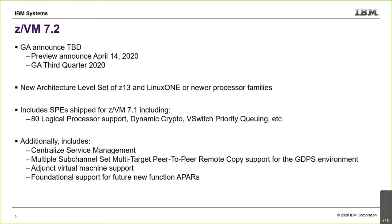With 7.2, all the SBEs — new function PTFs that shipped to 7.1 — will be in the base of 7.2. With the new two-year release cadence, most of the release will be a roll-up of enhancements that shipped in the previous release. There are a couple of exceptions: centralized service management, and multiple sub-channel sets with multi-target peer-to-peer remote copy support for the GDPS environment.